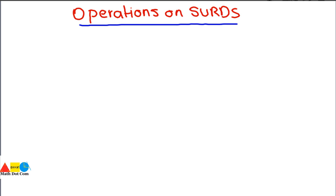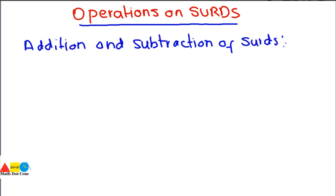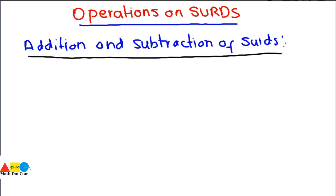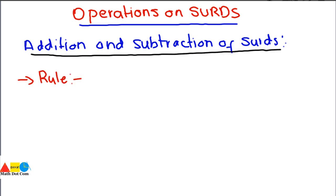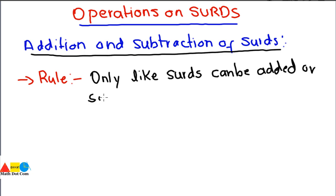First of all we will see the addition and subtraction of surds — how you can add or subtract two surds and what rule is required for that. The rule is: only like surds can be added or subtracted. You have to keep this rule in mind while adding or subtracting surds. Before we move on, we will see what are like surds and what are unlike surds.